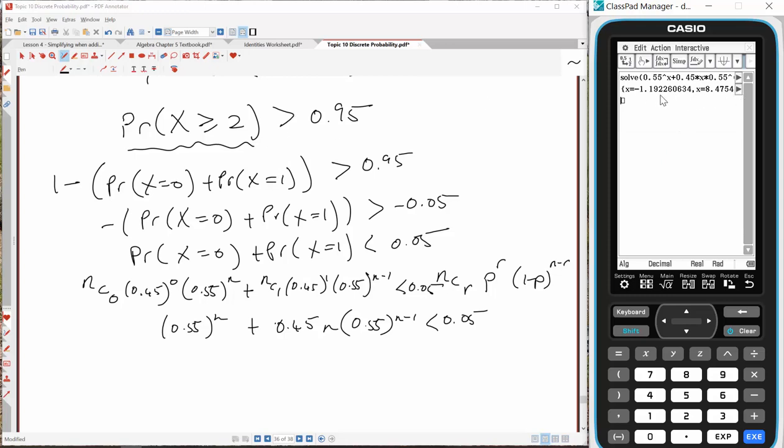More than one solution exists. We've got a negative solution here, so we're going to ignore that negative solution, and we're going to say that in this case, n must be greater than 8.0475. Therefore, n equals 9. I'll show you what that means now.